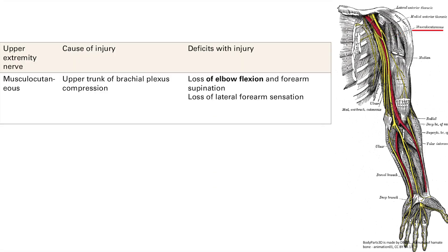Next is the musculocutaneous nerve, which is highlighted here in red. That can be caused by damage to the upper trunk of the brachial plexus. If you get damage to that, you're going to lose elbow flexion and forearm supination. You're also going to get loss of lateral forearm sensation.